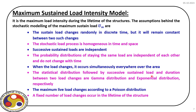The statistical distributions followed by successive sustained loads and the duration between two load changes are gamma distribution and exponential distribution respectively. These are recommendations given in books and previous research papers. For a special structure, if we need to evaluate those distributions, we can do so using statistical data. The maximum live load changes follow Poisson distribution because these are discrete events, and there is a finite number of changes within the lifespan capital T.